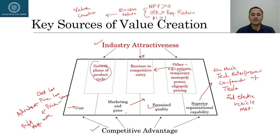Through industry attractiveness and competitive advantages, companies create value, and that value creation is shown in higher NPVs, higher internal rates of return, and higher profitability indices. If the NPV is more than zero, that extra value goes to shareholders as an excess return and increases the value of shareholders. So if the NPV is $2 million, that $2 million adds value to shareholders as well.